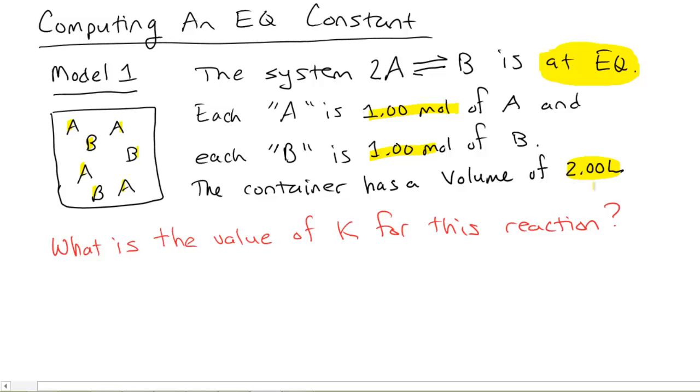So, the question is, what's the equilibrium constant for this reaction? And the way to go about answering this question is to first remember that our equilibrium expression is something we can write no matter what we know. So, no matter what we know, we can say, oh, the equilibrium expression for this particular reaction is the concentration of B divided by the concentration of A squared.